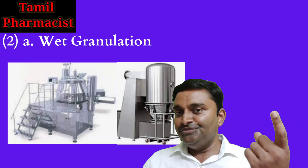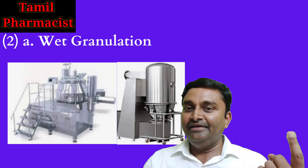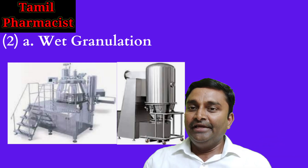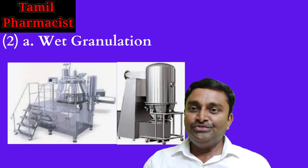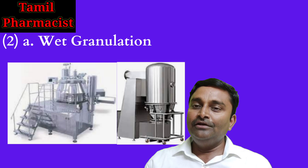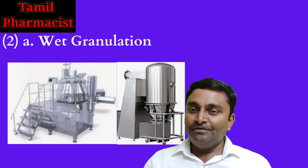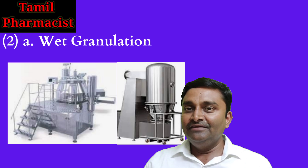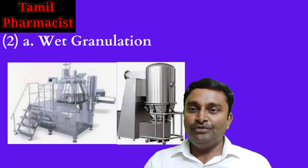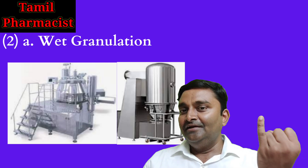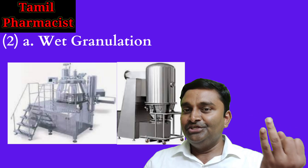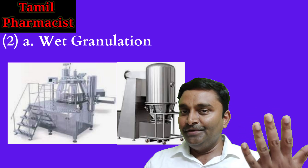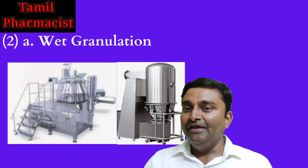For granulation, you can use an RMG machine — that is a Rapid Mixture Granulator, also called a high-shear mixture granulator. You can also use a fluid bed processor, which helps with both granulation and drying. In older setups, only a fluid bed dryer was used for the drying step. So the overall wet granulation process covers: sizing of API and excipients, granulation, drying, re-sizing, lubrication, and compression.